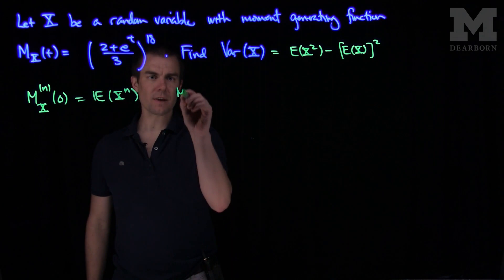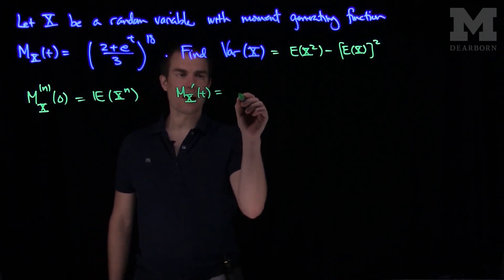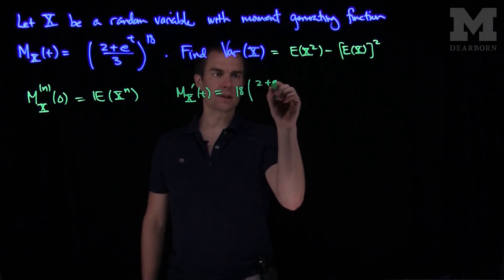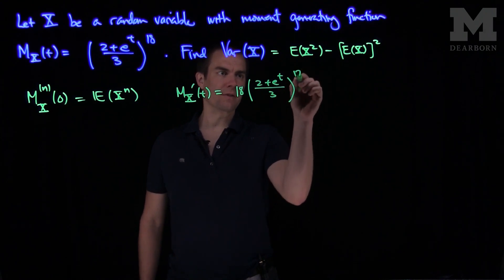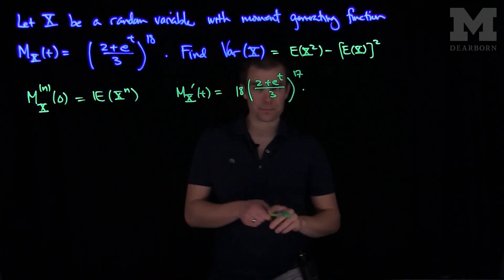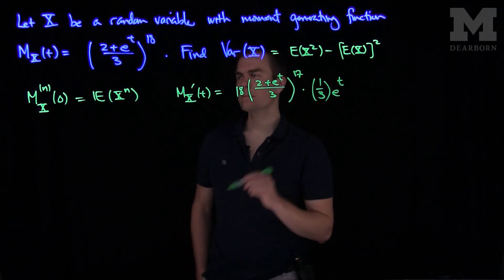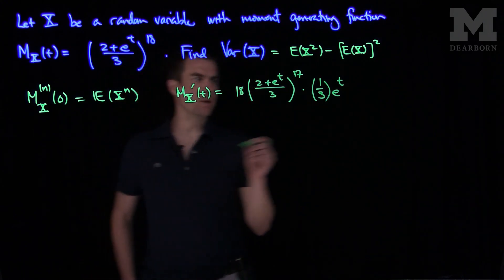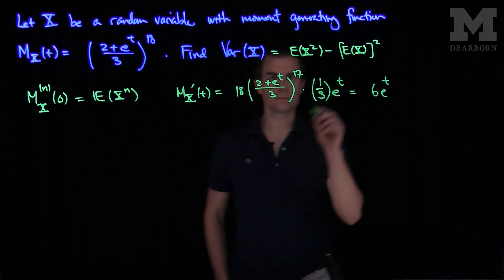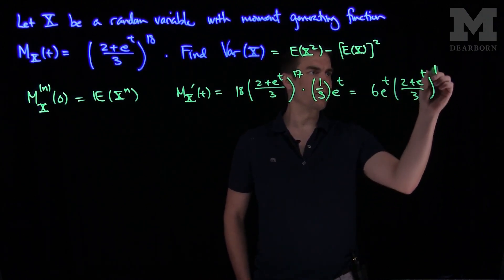For this function, if I do mx prime of t, that will be 18 and then 2 plus e to the t over 3 to the 17th power, times the derivative of the function on the inside. And that will be 1 third times e to the t. Because I have e to the t over 3, so this will simplify to 6 e to the t and then 2 plus e to the t over 3 to the 17th power.